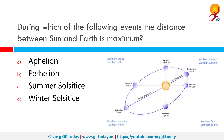During which of the following events is the distance between the sun and earth at its maximum? The correct answer is aphelion. Earth is closest to the sun during perihelion, around January 3rd, while it is furthest from the sun at aphelion, which is around July 4th.